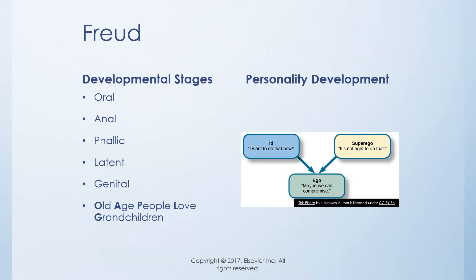Freud had five psychosexual stages of development. He believed each individual moves through specific stages, and moving through them created unconscious conflicts. We successfully move through a stage when we resolve those conflicts. Freud's five stages begin with the oral stage, which corresponds to infancy — from birth to about age one or 18 months.